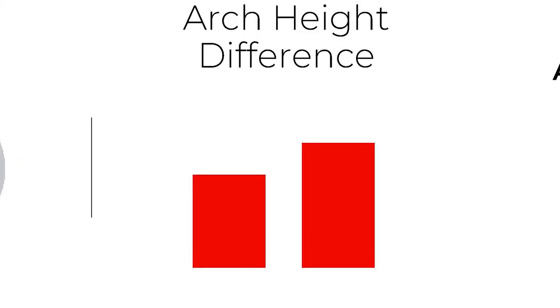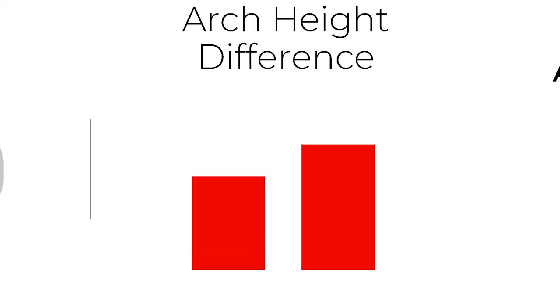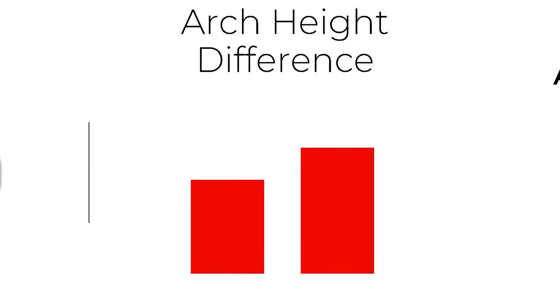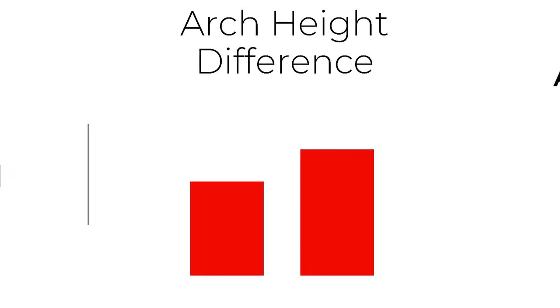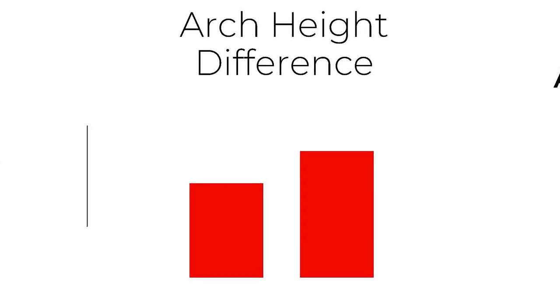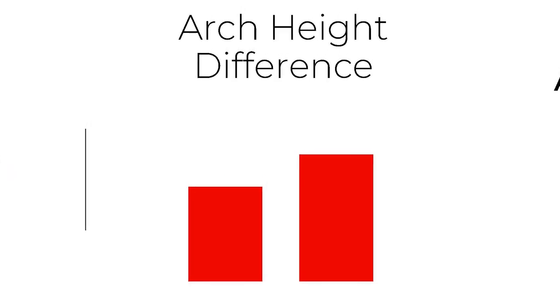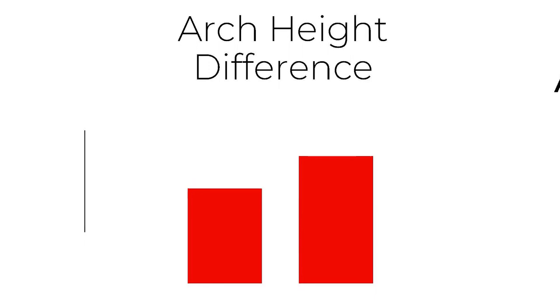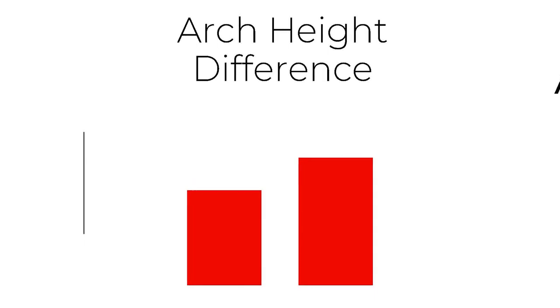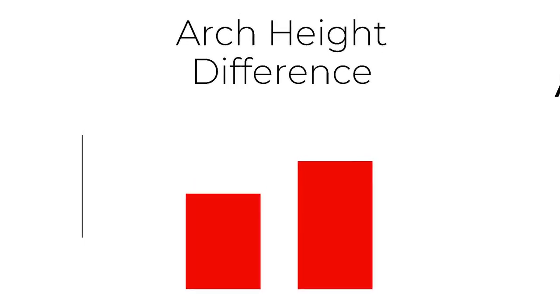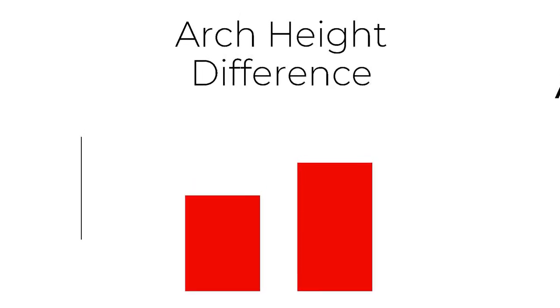Another data point is our arch height measurements. This is an indication of the collective amount of arch height present in both feet. All we're looking for is even bars. If we see imbalances in the bar heights, that suggests that our arches are not the same height, and orthotics are going to help correct that.